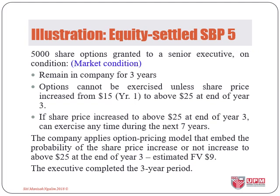In the fifth illustration, 5,000 share options were granted to a senior executive with a performance condition where the performance target was based on market condition. First, he must remain for three years. Second, the share price must increase to above $25 at end of the three-year vesting period for him to exercise the option. As an added incentive, if he achieves the performance target, he can exercise the option at any time within seven years after the vesting period. The fair value was estimated at $9 for the share price to reach $25 by end of year three.